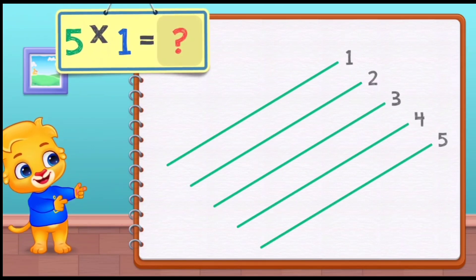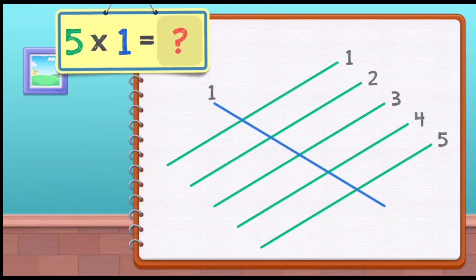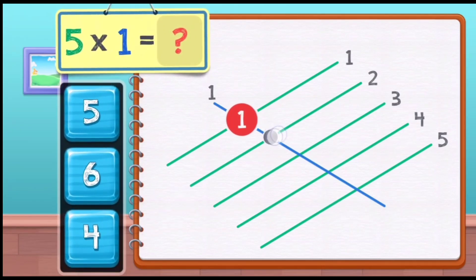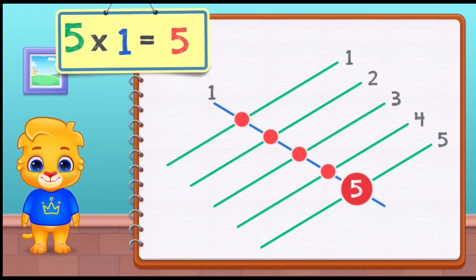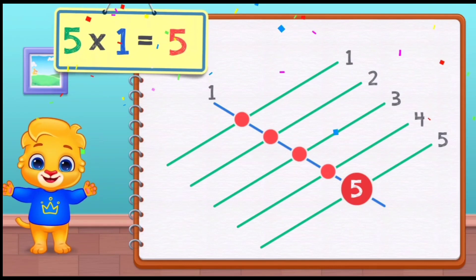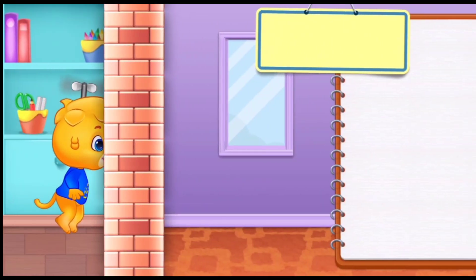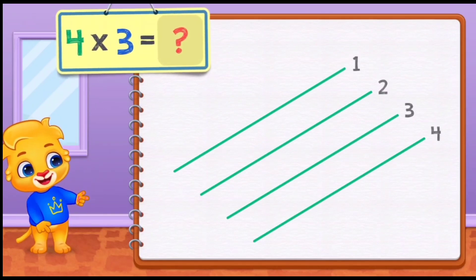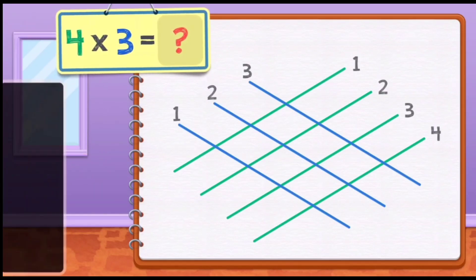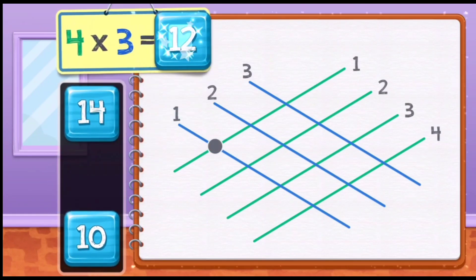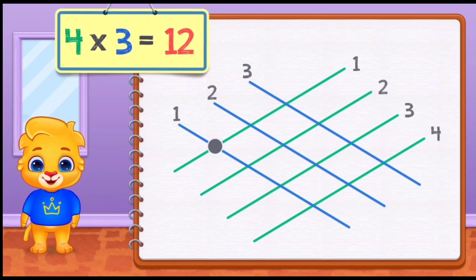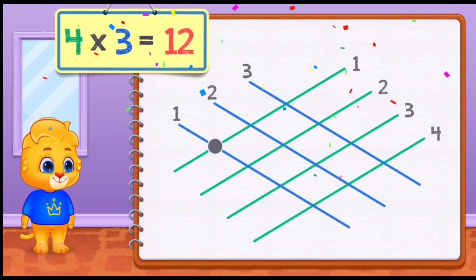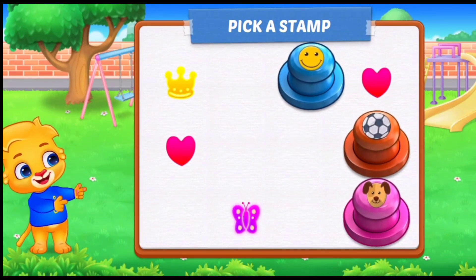5 times 1 equals: 1, 2, 3, 4, 5. 5 times 1 equals 5. 4 times 3 equals 12. 4 times 3 equals 12. Pick a stamp.